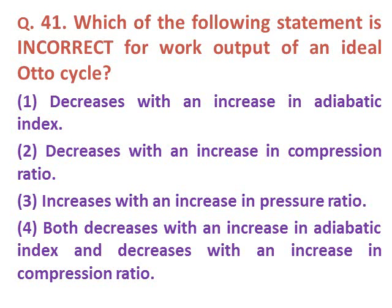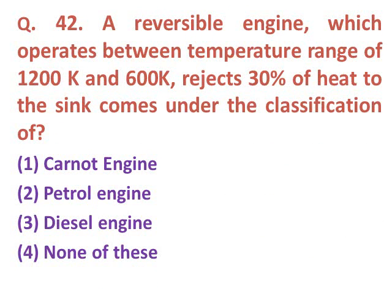Question forty-one: Which of the following statements is incorrect for the work output of an ideal Otto cycle? Option one: decreases with increase in adiabatic index. Option two: decreases with increase in compression ratio. Option three: increases with increase in pressure ratio. Option four: both decrease with increase in adiabatic index and decrease with increase in compression ratio. The correct answer is option four.